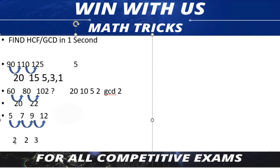If we divide using the GCD method, we check each number. For each 3 or 1, when we divide a number the answer is 1. So the GCD of those numbers, after checking all divisors, comes out to 1.